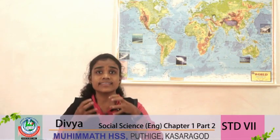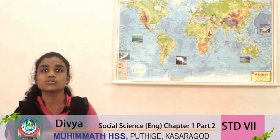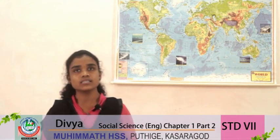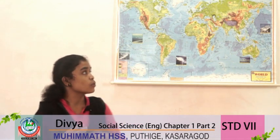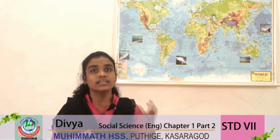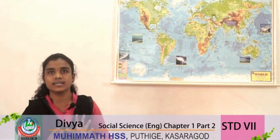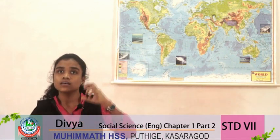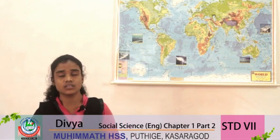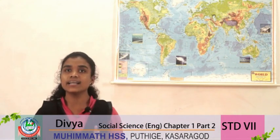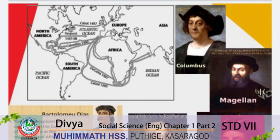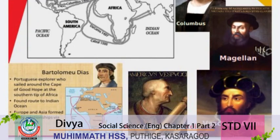This finding of new routes led to the discovery of many continents during that period. There were many discoverers during that period in search of sea routes — Magellan, Vasco da Gama, Columbus, Christopher Columbus, Amerigo Vespucci, and Bartholomeo Dias. They were the famous discoverers of the seven continents.